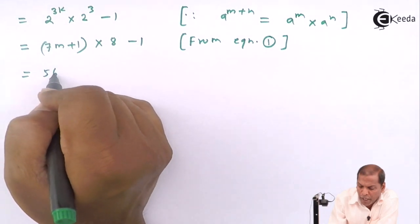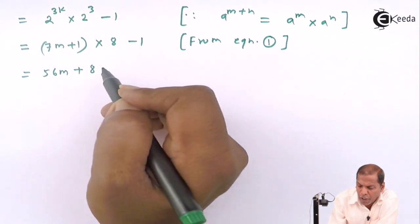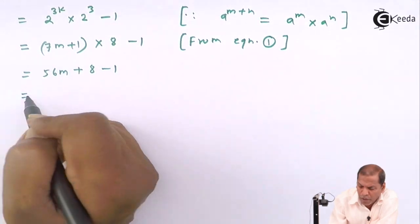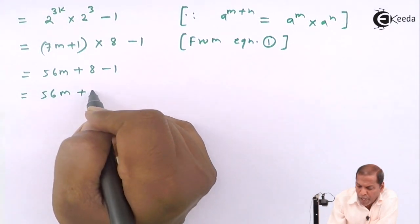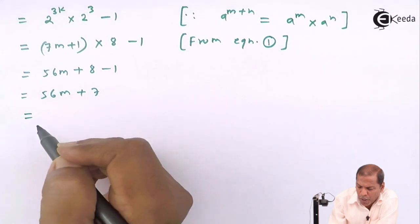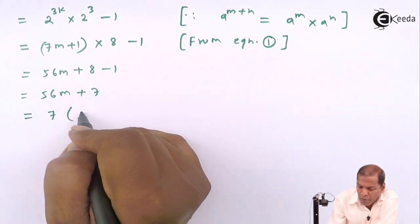And on further simplifying, now 7m into 8 that gives us 56m plus 1 into 8 is 8 minus 1. So that is 56m, now 8 minus 1 gives us plus 7.